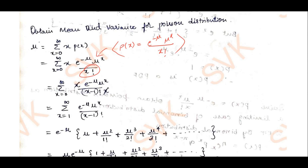For that reason, we start the summation from x equal to 1 to infinity of e to the power minus mu into mu to the power x divided by (x minus 1) factorial. Expanding this: e to the power minus mu is independent of x, so take it out. Putting x equal to 1 gives mu power 1, which is mu; x equal to 2 gives mu squared divided by 1 factorial; x equal to 3 gives mu cubed divided by 2 factorial; mu to the 4 divided by 3 factorial, and so on.